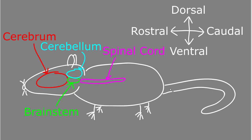So in the rat in its standard anatomic position, the term rostral means toward the nose or forward, caudal means toward the tail or backwards, dorsal means up or toward the back, and ventral means down or toward the belly. For example, the cerebrum is rostral to the brainstem because it's in the direction of the nose from the brainstem. The spinal cord is caudal to the brainstem because it's in the direction of the tail. The cerebellum is dorsal to the brainstem because it's up from the brainstem, and the brainstem is ventral to the cerebellum because it's down from the cerebellum.